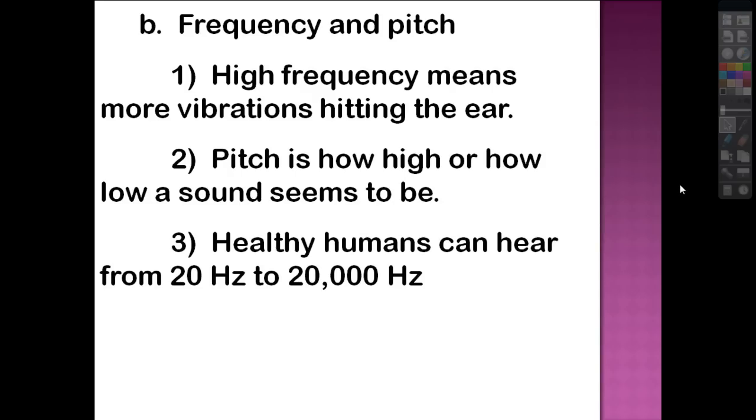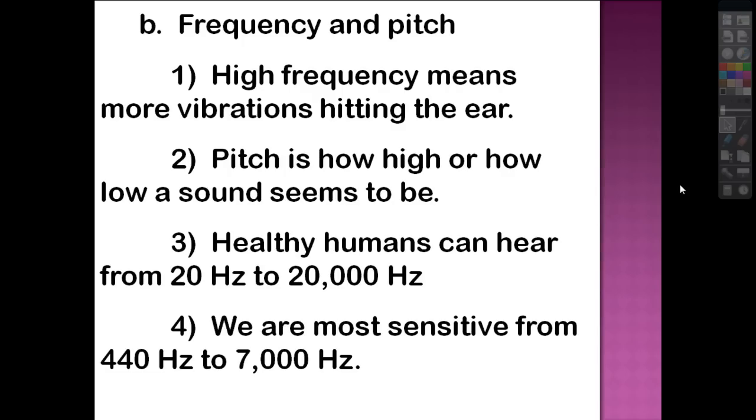Healthy human ears can hear from 20 hertz to about 20,000 hertz. That's a lot of hertz. But we're most sensitive. We can distinguish more sounds in the 440 to 7,000 hertz range. We get outside this range, it's harder to distinguish sounds. We have to actually concentrate on what we're hearing.